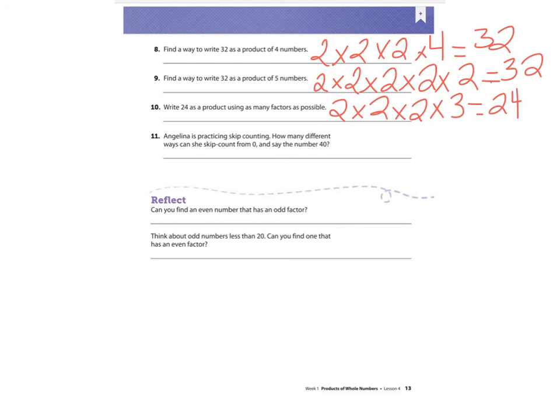Number 11 says Angela is practicing skip counting. How many different ways can she skip count from zero and say the number 40? You could skip count by twos, by fours, by fives, by eights, or by tens. Tens would be easy: 10, 20, 30, 40. Fives: 5, 10, 15, 20, 25, 30, 35, 40. So you could skip count by twos, by fives, and by tens — several different ways.